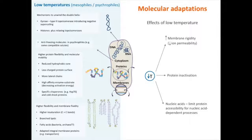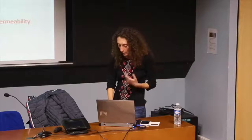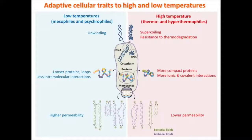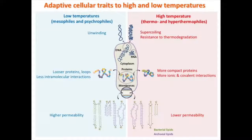At the membrane level in psychrophiles, you observe higher unsaturation of lateral chains, which increases flexibility. In many cases branched lipids are also present, having the same effect, along with a variety of adapted transporters. In summary, comparing adaptations to high and low temperature, you find mirror-opposite properties: positive supercoils vs. negative supercoils in DNA, compact vs. flexible proteins, and lower vs. higher membrane permeability.